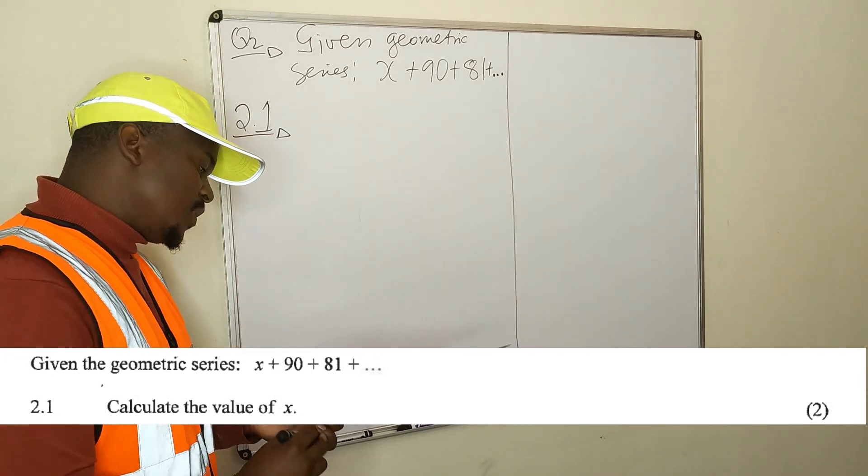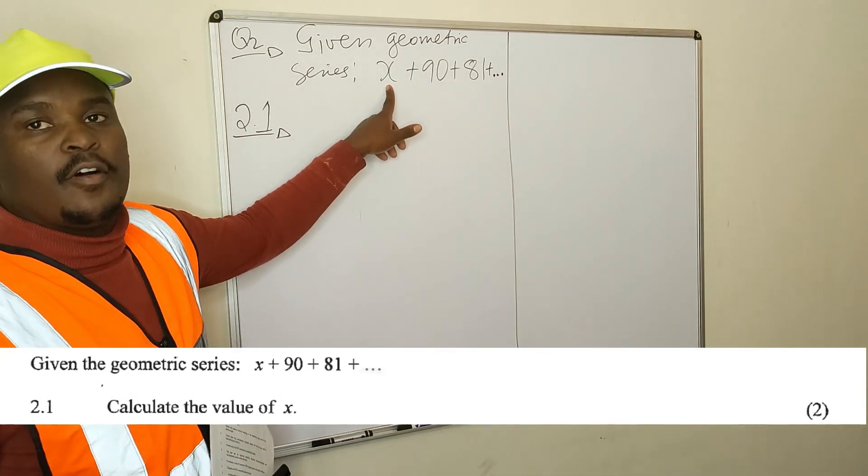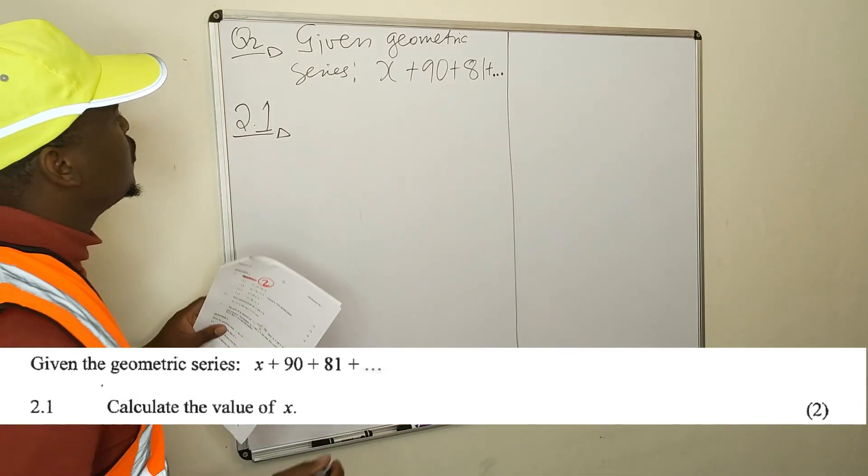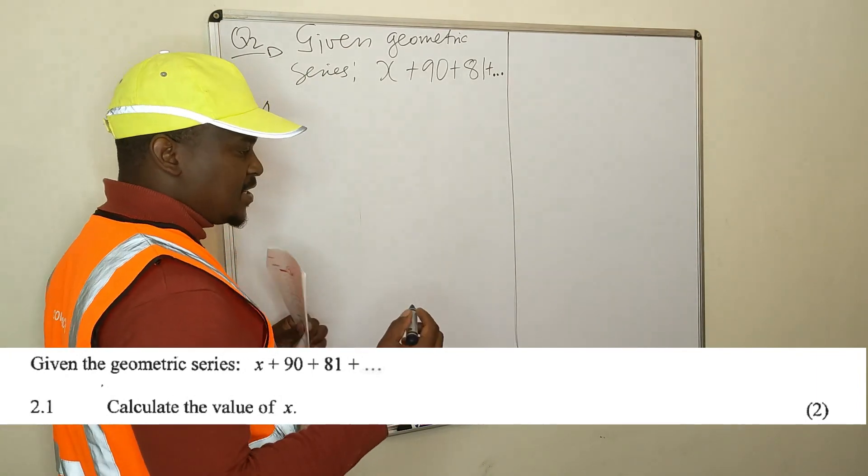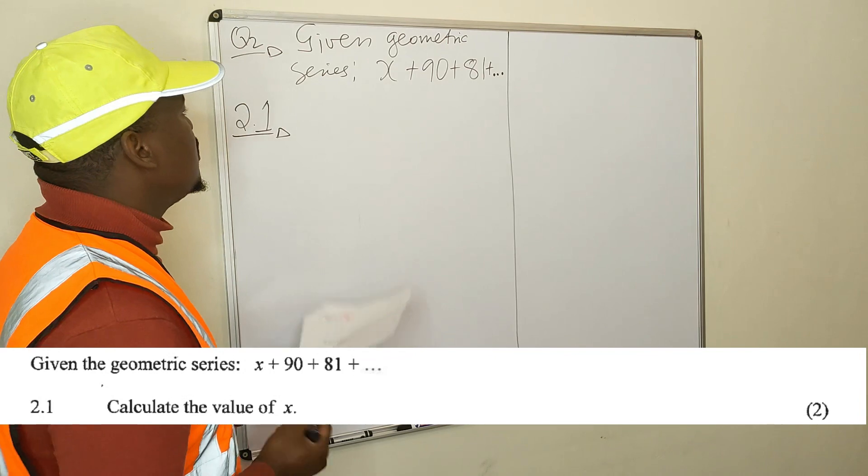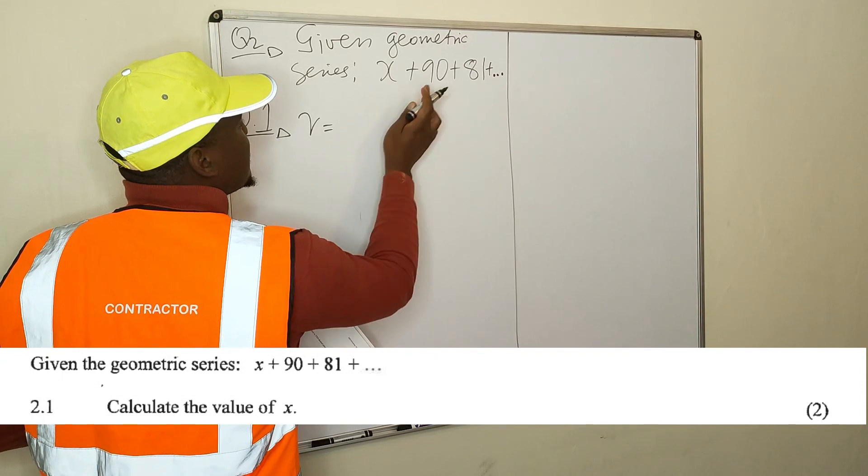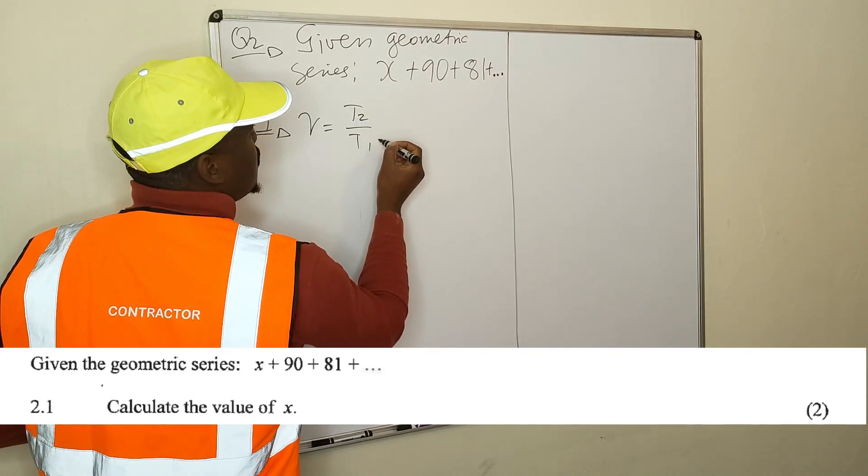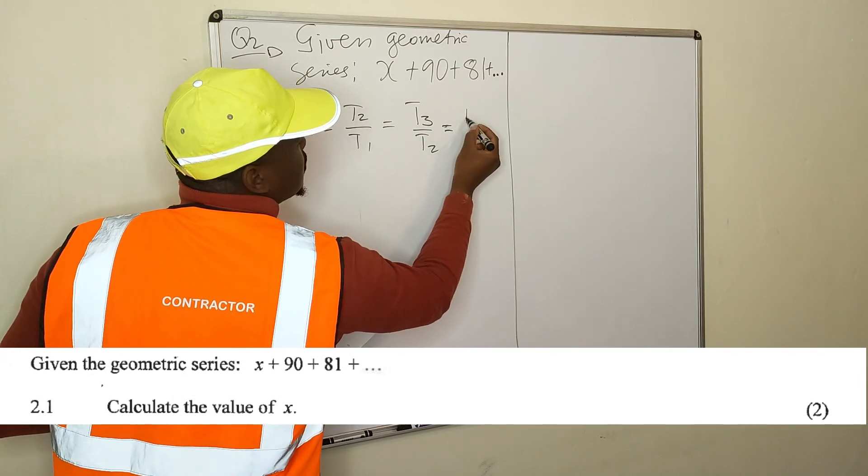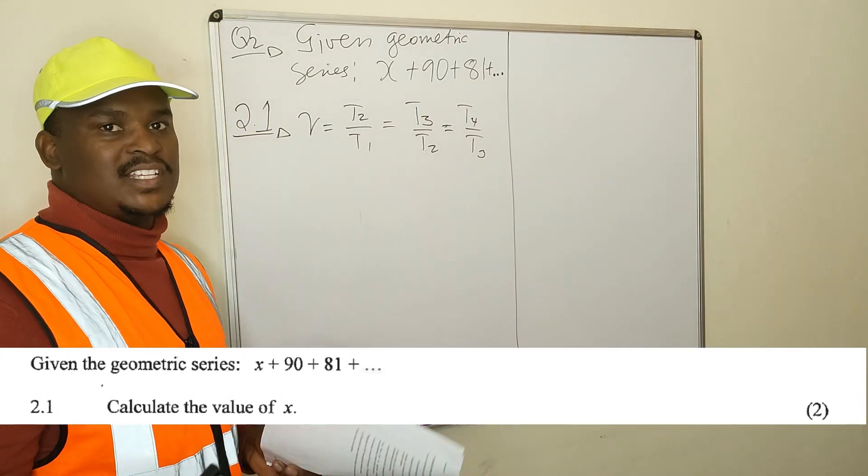So we have 2.1 - calculate the value of x. They want you to find the value of x, the first term of this geometric series. So how do you do this? I know that this is a geometric series. A geometric series has a common ratio, which means your common ratio is you will find it by saying t2 divided by t1, which is the same as t3 divided by t2. It's the ratio of two consecutive terms.